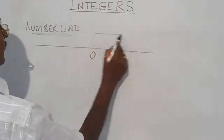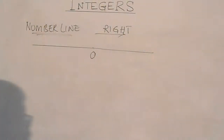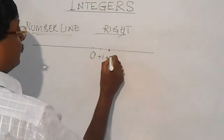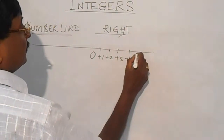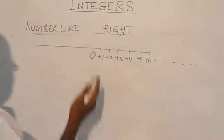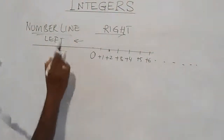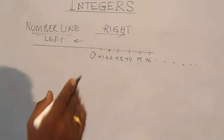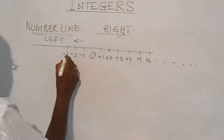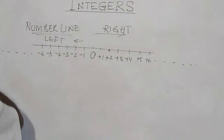If we move towards the right side from zero, the value keeps on increasing — that can be classified as a positive value. For example: plus one, plus two, plus three, plus four, plus five, plus six, and so on. And from zero, on the left side, if we are going towards left, the value keeps on reducing and it becomes a negative value — minus one, minus two, minus three, minus four, minus five, minus six, and so on.